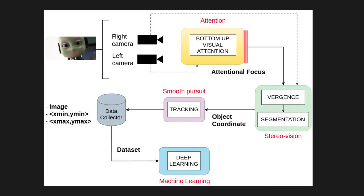We integrated this idea into a unified computational framework, which allows the iCub robot to explore the scene as a human could do, using a visual attention mechanism and active vision. The visual attention module is used to guide the robot's focus on salient regions of the input image, which is then used as a proxy for the stereo vision pipeline. By retaining only a part of the information, this facilitates the segmentation of the object from the background. Once the object is segmented, the robot can track it, which gives a collection of data points that can be used to create a dataset.